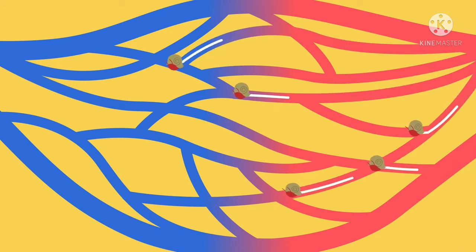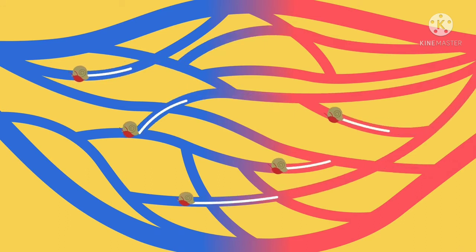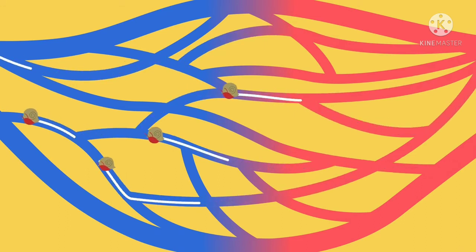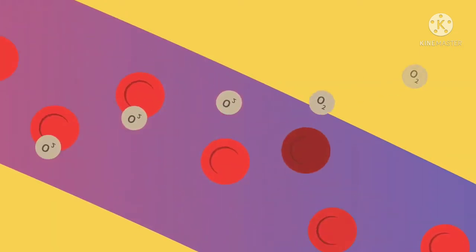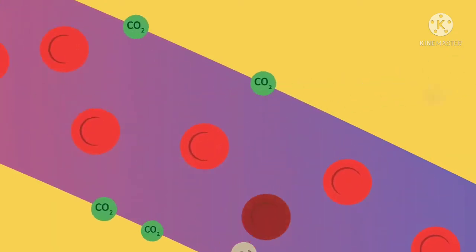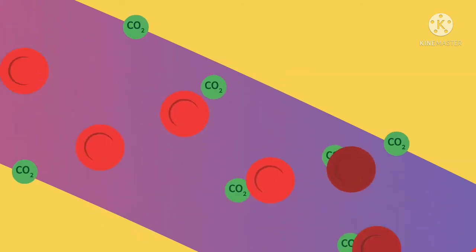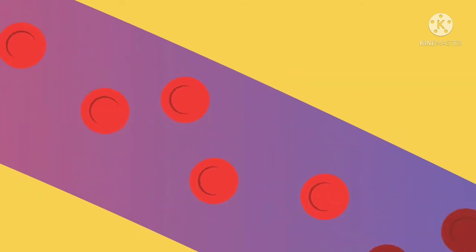for two reasons. The capillaries are much, much smaller, and slower movement allows for gas exchange. Here, oxygen is offloaded onto cells, so blood becomes deoxygenated and carbon dioxide and other waste products are picked up.